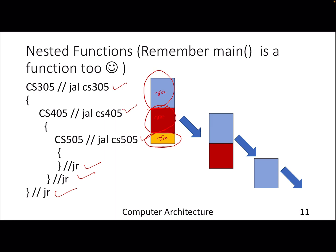Whenever you are done with a particular function and want to restore, instead of looking into the content of RA directly, you read the stack pointer which is storing the return address. Once that function is done, the stack pointer will store the return address for that particular function call, and so it continues — no matter how many functions or nested function calls you have. That is the beauty of the stack pointer; you don't need to worry about what happens to your return addresses.